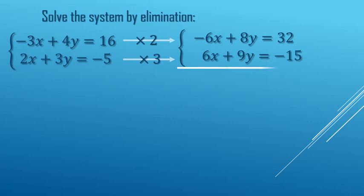Now we're ready for the addition step. Negative 6x plus 6x, 0x. 8y and 9y, 17y. 32 minus 15, 17. We have 0x's. They have been eliminated.